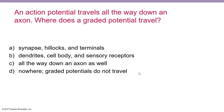So a lot of response for B. An action potential travels all the way down an axon — but where does a graded potential travel? Although option D looks tempting, graded potentials do not travel nowhere — that is not true.